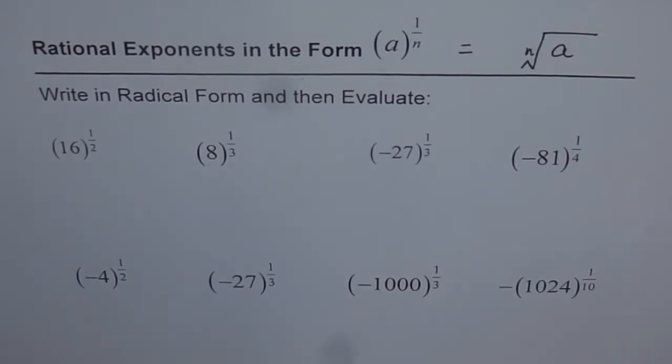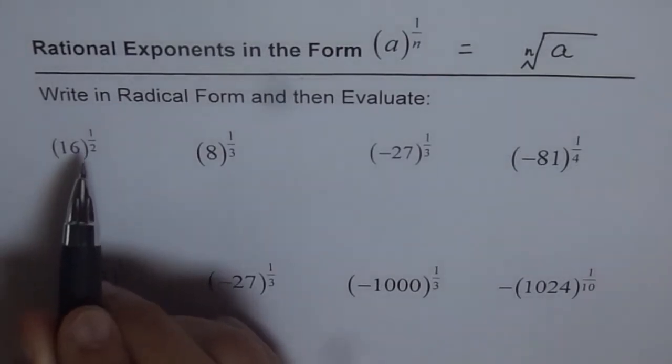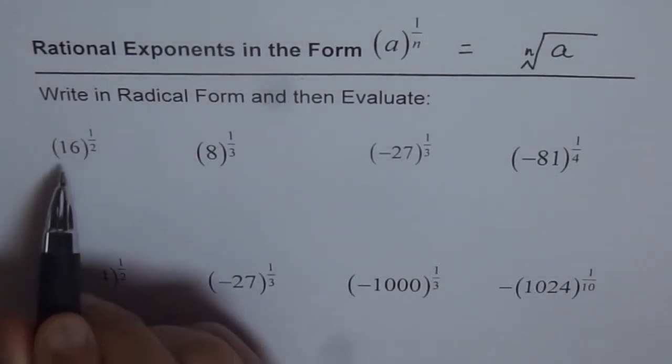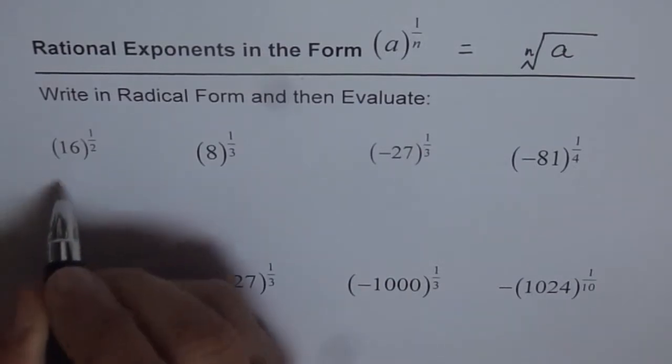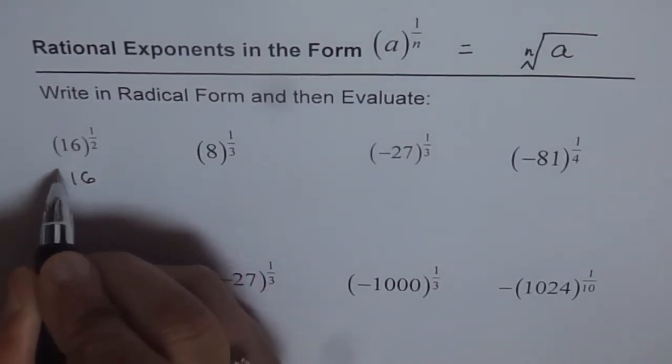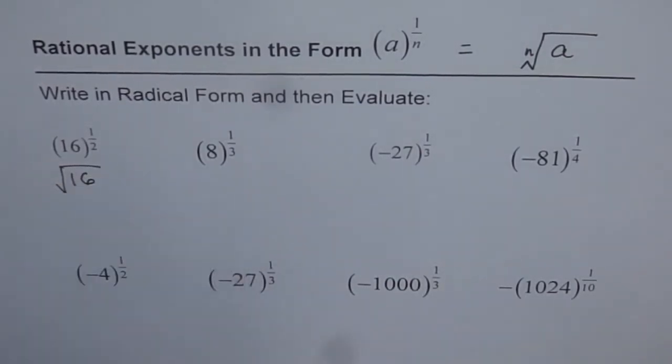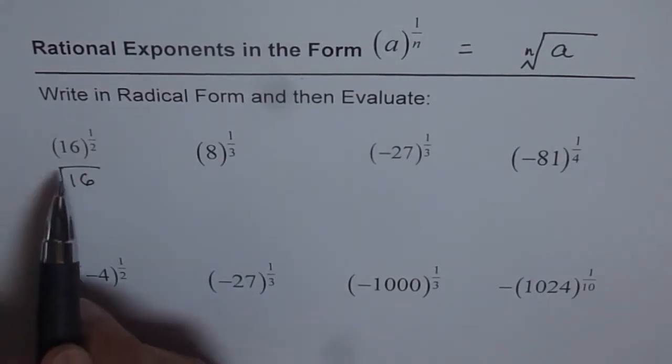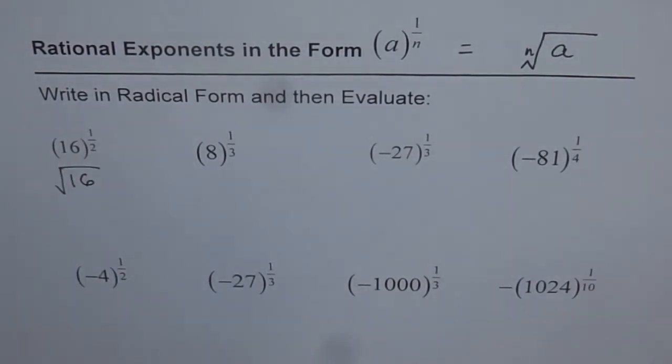Here is how I will do them. The first one is 16 to the power of 1 over 2, or 16 to the exponent of half, which could be written as square root of 16. That is the radical form of 16 to the power of half.